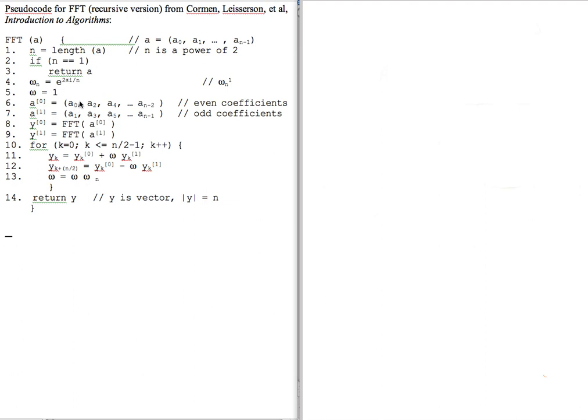Otherwise, I divide the data vector into two halves: the even coefficients and the odd coefficients. Then call the Fourier transform recursively on each of those halves.